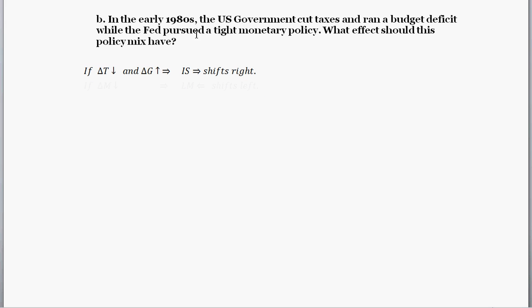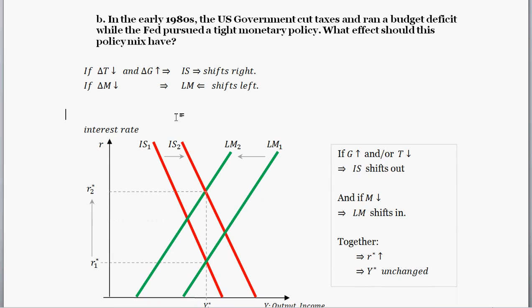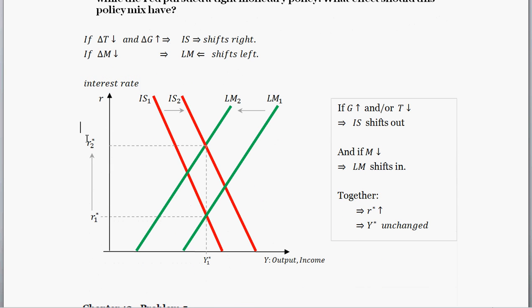And I'll show you how to draw that in a second. And then the second part of this, the monetary policy side, the Fed pursued a tight monetary policy. Usually when we imply tight monetary policy, we're saying that the money supply is either decreasing or the money supply is growing at a slower rate than it is otherwise. So what happens when we decrease the money supply? We have a shift leftward or shift inward of the LM curve.